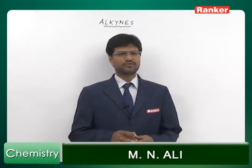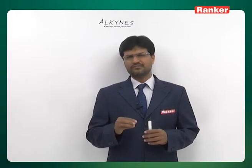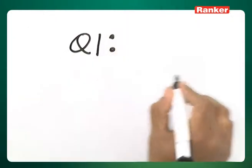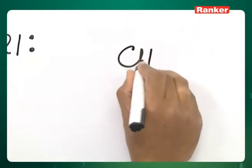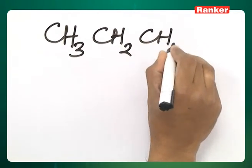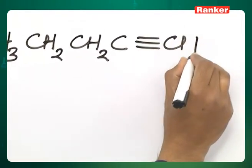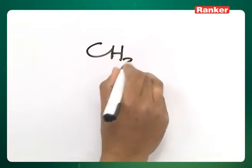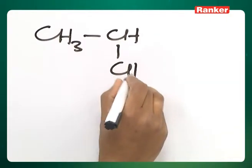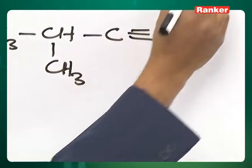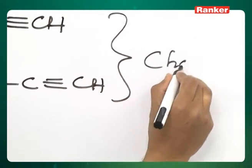Position isomerism starts from butyne onwards — you can have 1-butyne and 2-butyne. But for chain isomerism you need a minimum of five carbons. For example, this is pentyne, and its chain isomer can be written as CH3CH(CH3)-C≡CH. These two are a pair of chain isomers.